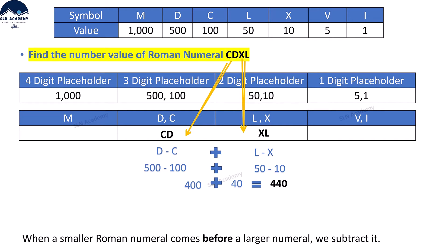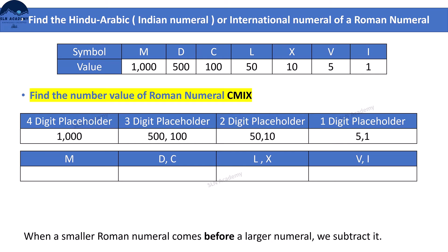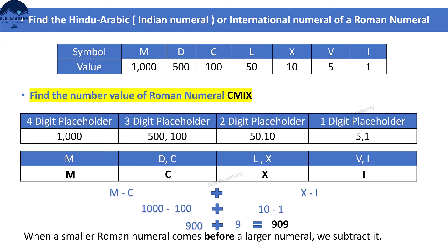Let us see another example. Find the number value of Roman numeral CMIX. Divide the given Roman numeral and arrange them into the given digit groups. Here, M equals 1000, which is larger than C which is 100. When a smaller Roman numeral comes before a larger numeral, we subtract it. Here C came before M, so we subtract them. In the same way, X equals 10, which is larger than I which is 1, and here I came before X, so we subtract them. The total value came as 909. So the number value of Roman numeral CMIX is 909.